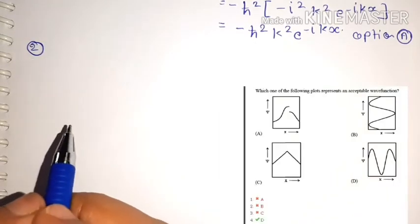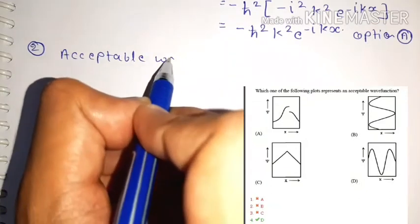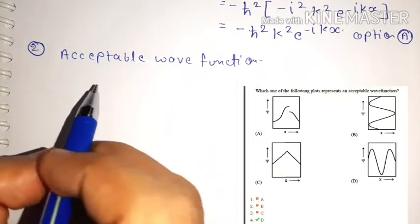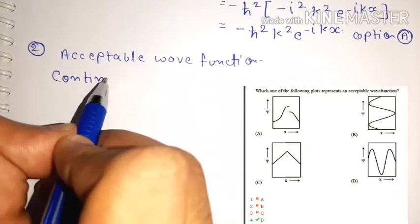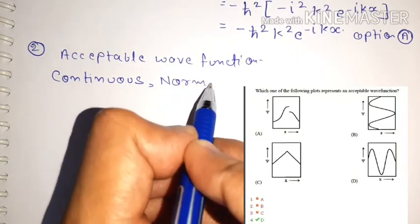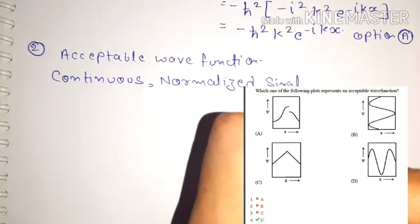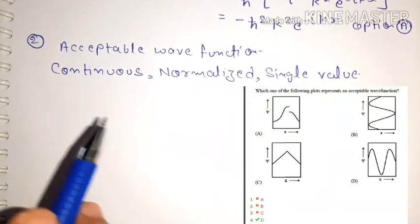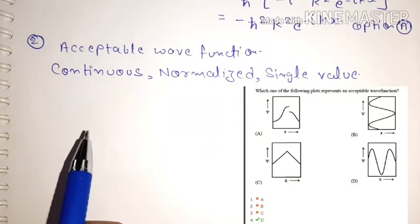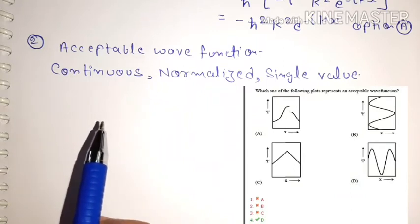In quantum mechanics, the conditions for an acceptable wave function are: the wave function should be continuous, it should be normalized, and it should be single-valued. If a wave function follows all these conditions it is acceptable; if any condition is broken, it is not acceptable.